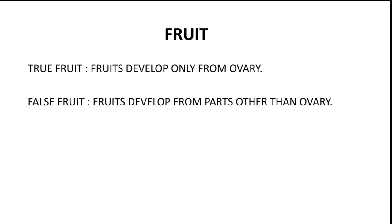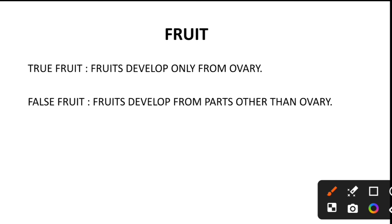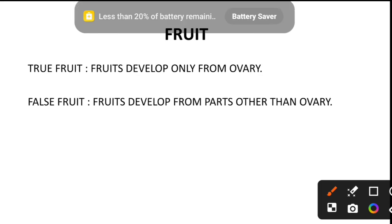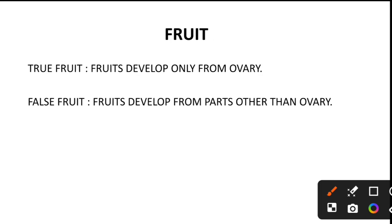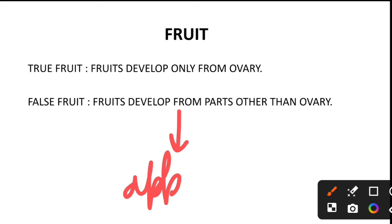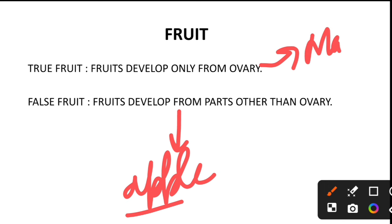The fruit is of two types — a common exam question. True fruits develop only from the ovary. False fruits develop from parts other than the ovary. Examples of false fruits: apple (develops from the thalamus) and strawberry. Example of a true fruit: mango. You can comment another example of true and false fruit.